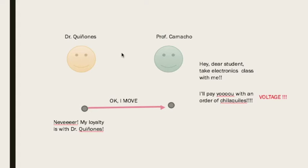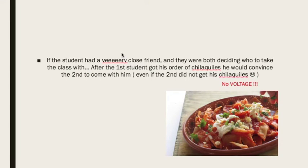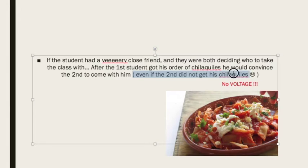But let's see the next point. If the student, in this case me, had a very close friend and they were both deciding who to take the class with, after the first student got his order of chilaquiles, he would convince the second to come with him because he's a friend. They want to make teams and everything. Even if the second didn't get his order of chilaquiles, this means no voltage.